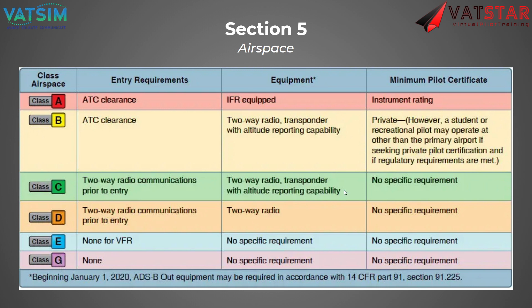As of January 1st in the U.S., ADS-B out equipment is required in certain airspace — above a Class Charlie up to 10,000 feet is required, and above 10,000 feet at all altitudes it's required. In Class Echo, above 10,000 MSL it's required, except below 2,500 AGL. There are all these requirements to enter certain airspace, and you can research the FAA's website for more great resources on that.